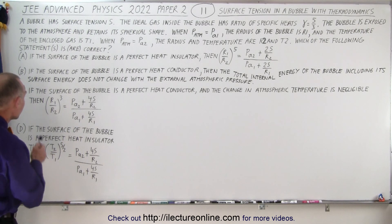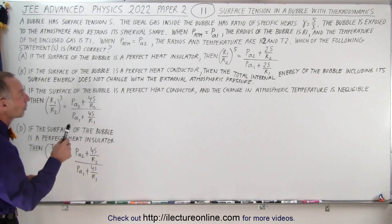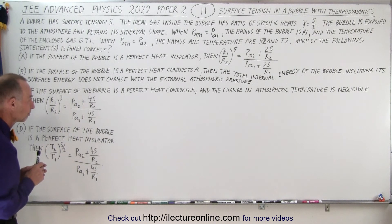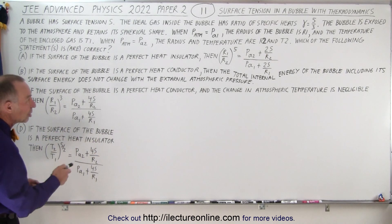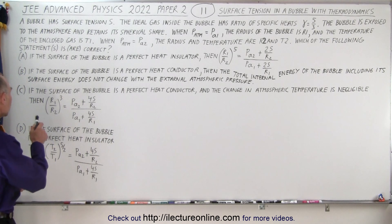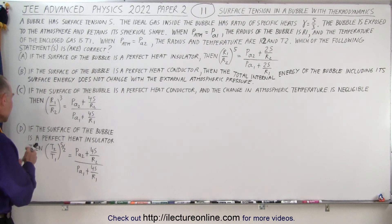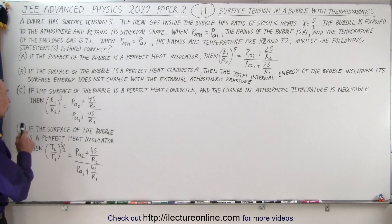Statement A says: if the surface of the bubble is a perfect heat insulator — no heat going in or out — then R1 over R2 to the 5th power must equal Pa2 plus 2S over R2, divided by Pa1 plus 2S over R1. Statement B: if the surface is a perfect heat conductor, the total internal energy of the bubble including its surface energy does not change with external atmospheric pressure. Statement C: if the surface is a perfect heat conductor and the change in atmospheric temperature is negligible, then R1 over R2 cubed equals Pa2 plus 4S over R2, divided by Pa1 plus 4S over R1. Statement D: if the surface is a perfect heat insulator, then the ratio T2 to T1 to the 5th power equals Pa2 plus 4S over R2, divided by Pa1 plus 4S over R1.